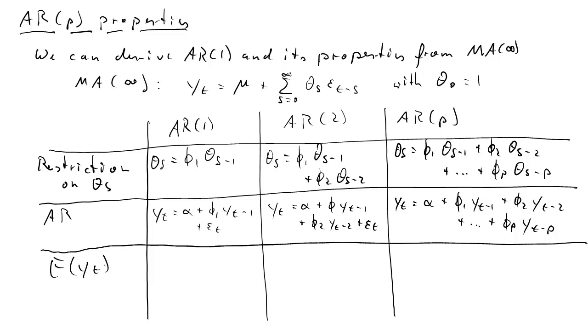So with these processes, what were the expected values of y_t? It turned out for the AR(1), it was alpha divided by 1 minus phi_1. For AR(2), it's going to be alpha divided by 1 minus phi_1 minus phi_2. And for AR(p),